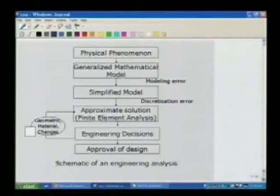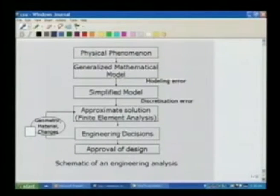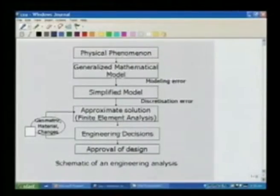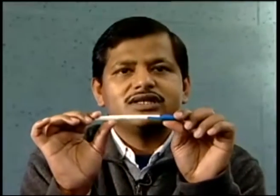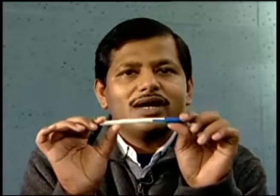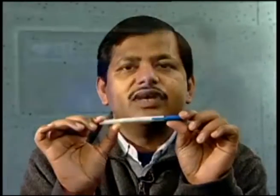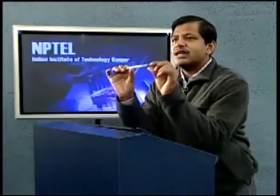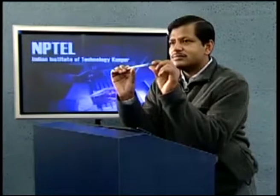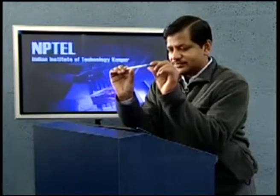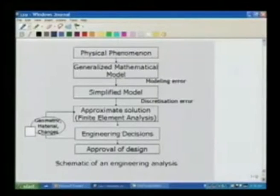This modeling error should be sufficiently small so that the physics that we are after is reasonably accurately predicted by our simplified model. For the simplified model, we have to obtain a solution. Unfortunately, in engineering practice — again let us look at this pen — this is quite a complicated geometry and we cannot obtain the exact solution to this simplified problem in the most general case. So what we would like to do is obtain an approximate solution.